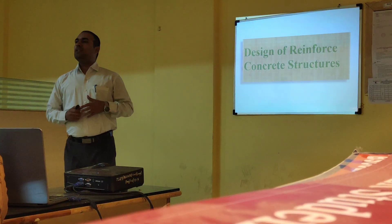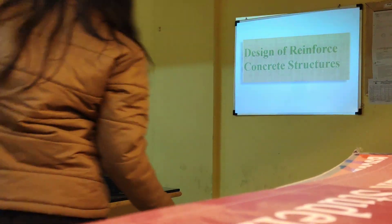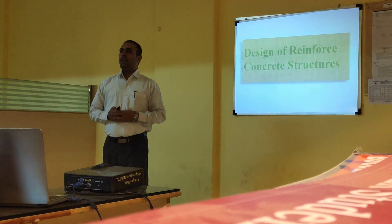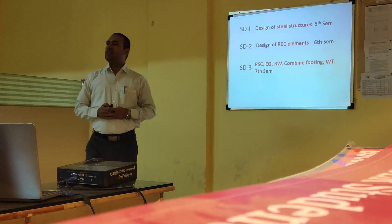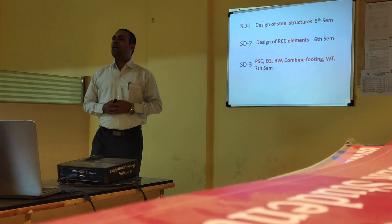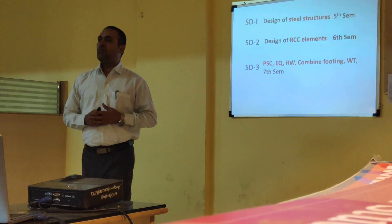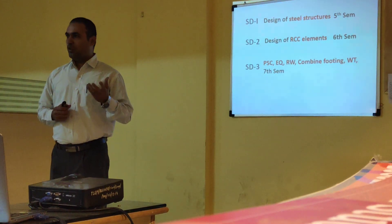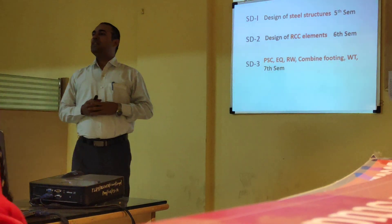Before going to explain what is design of reinforced cement concrete, we are going to see what we have already studied. In this design we have three parts: Structural Design I, Structural Design II, as well as Structural Design III. Structural Design II is already finished. In that, you have studied design of steel structures — tension member, compression member, beam, column, industrial roof — and you are aware of how to design using the limit state method.